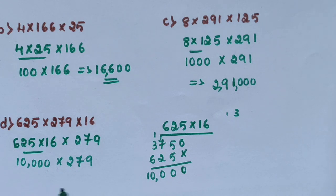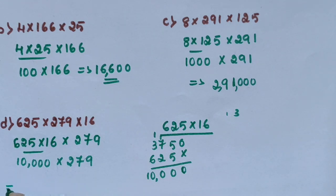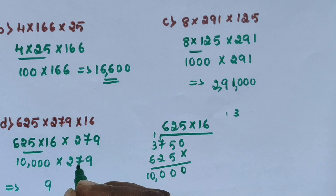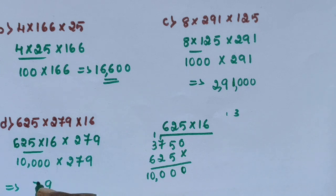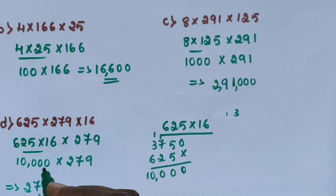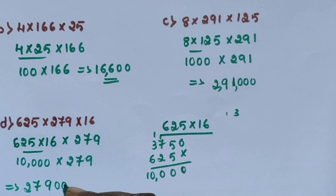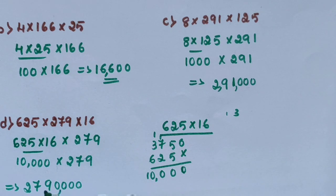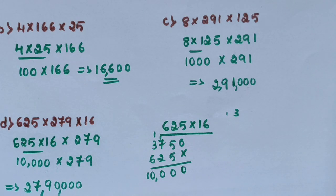Multiply 10,000 into 279. 1 into 9 is 9, 1 into 7 is 7, 1 into 2 is 2. Add 4 zeros. The answer is 2,790,000.